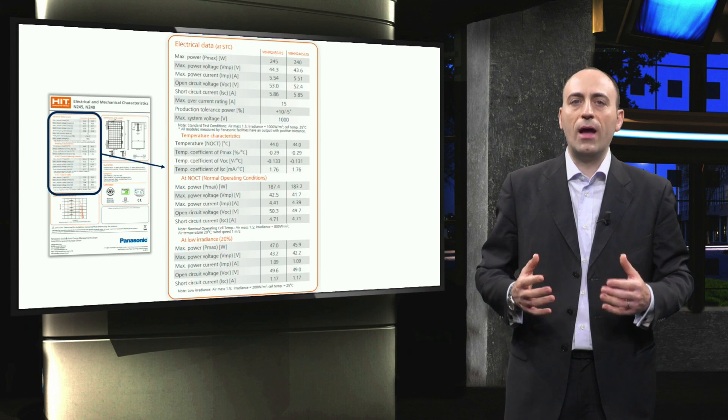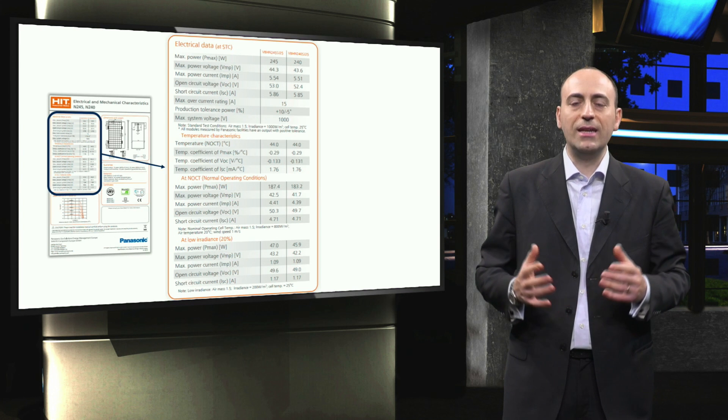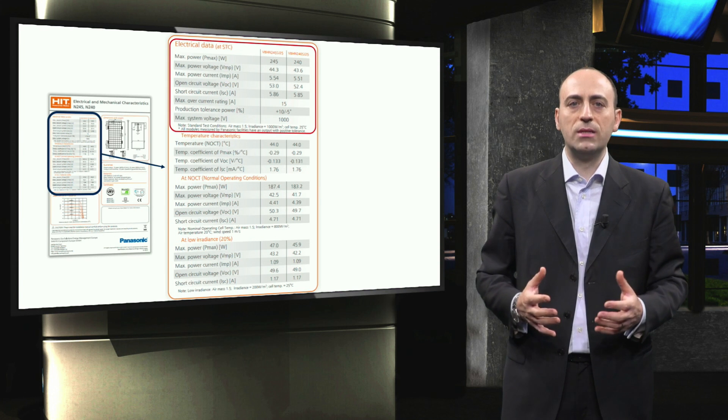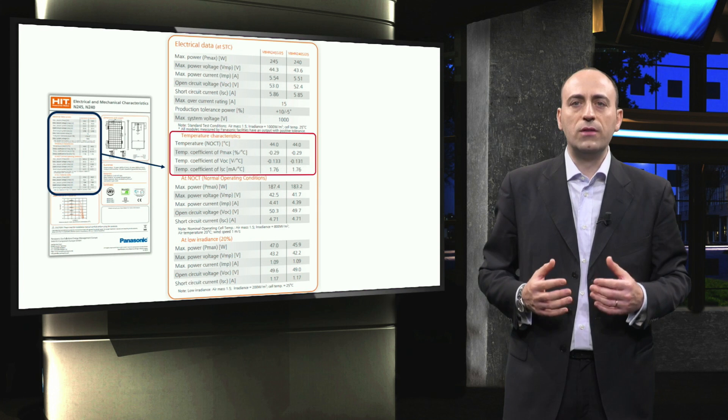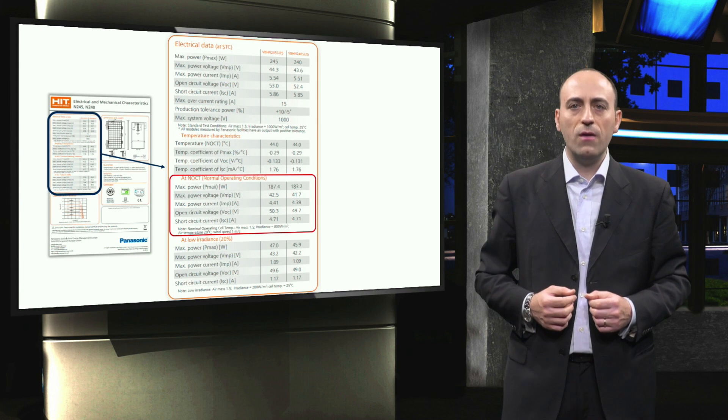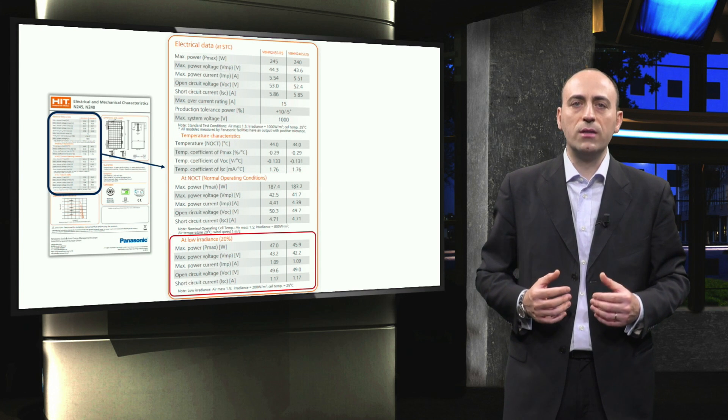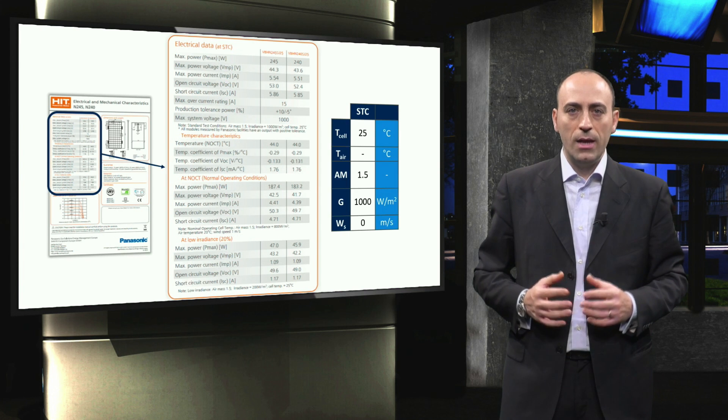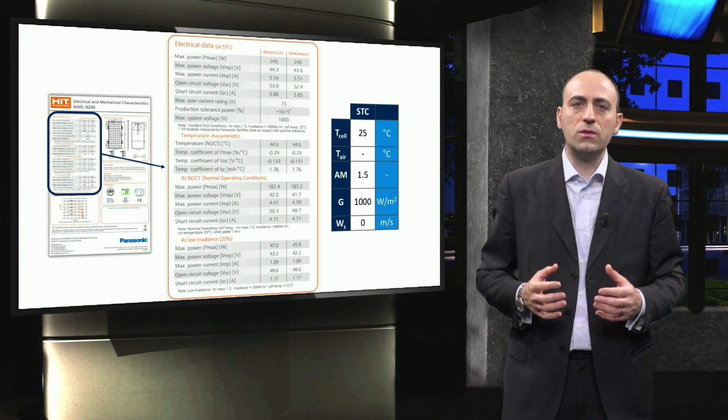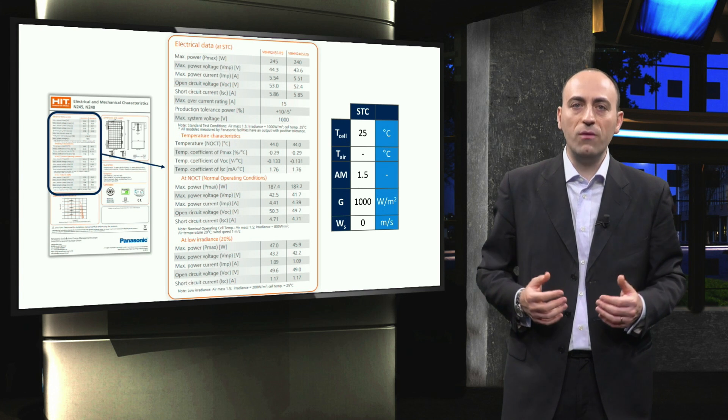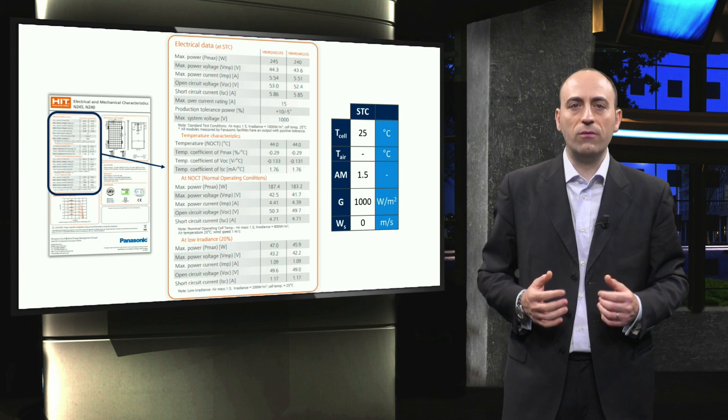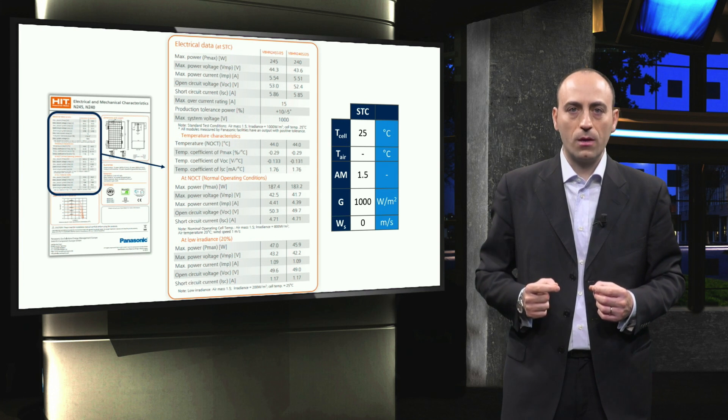Finally, let's take a look at, perhaps, the most important part of the datasheet: the electrical data. These are organized into four groups. The first table provides the properties at standard test conditions. Next, the temperature characteristics are shown, followed by the module properties at normal operating conditions. Finally, the module performance under low irradiance conditions is shown. Let's start with the properties at standard test conditions. As you may recall, the standard test conditions are 1 sun illumination, which is the AM 1.5 spectrum at 1000 Watt per square meter, a constant module temperature of 25 degrees Celsius, and the absence of wind.